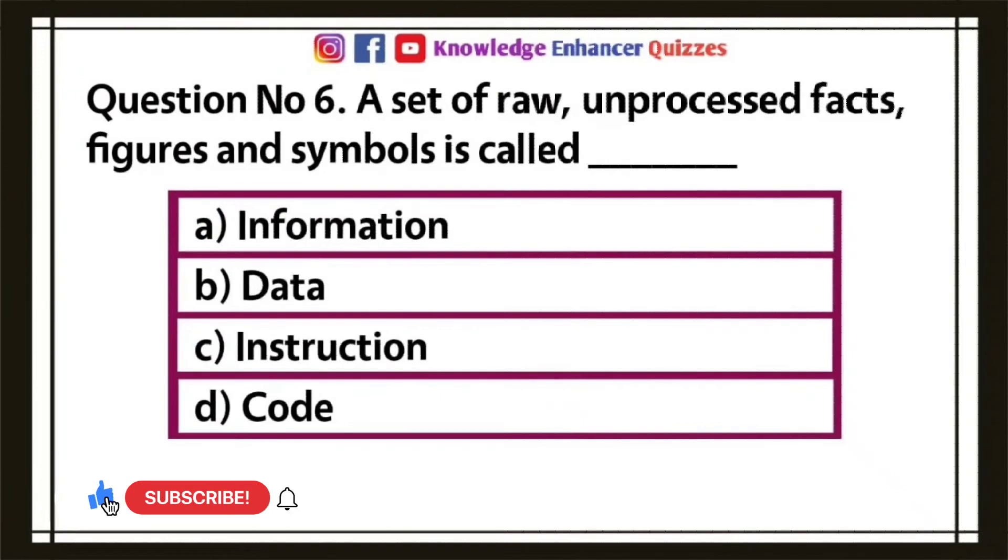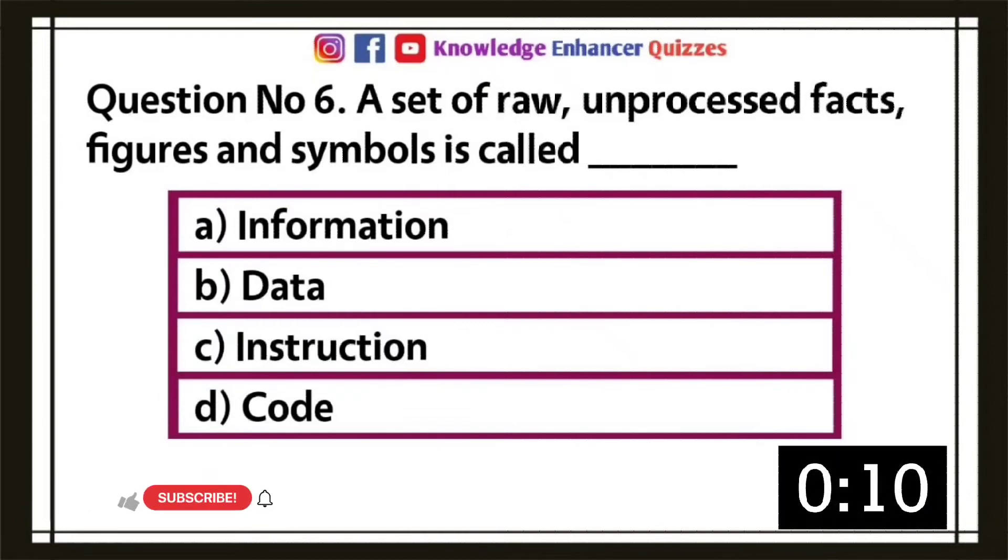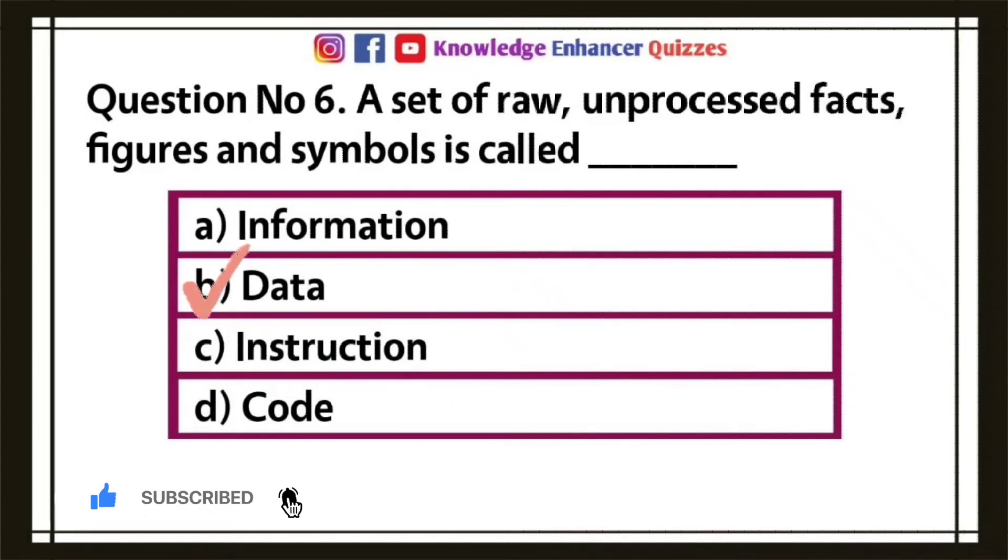Question number six, a set of raw, unprocessed facts, figures and symbols is called: A, information; B, data; C, instruction; D, code. Option B is the right answer.